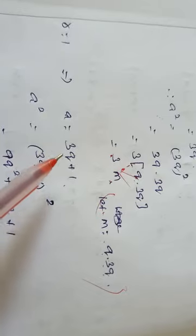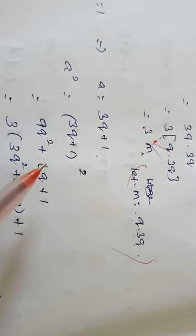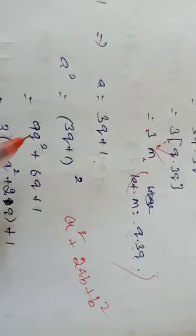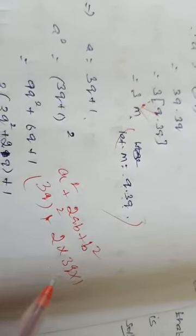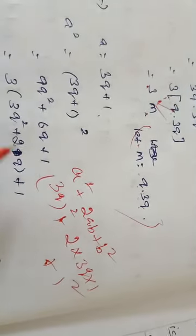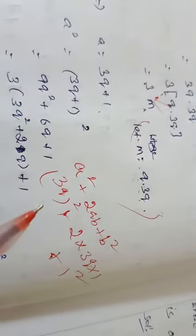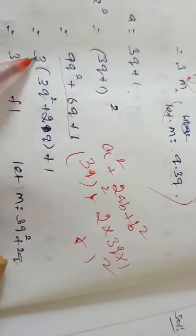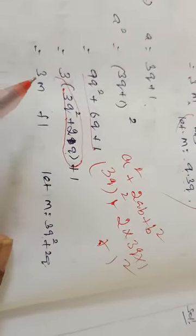Next, if R equal to 1, then A equal to 3q plus 1. We take the square on both sides: A squared equal to 3q plus 1 whole squared. Using the identity A plus B whole squared equals A squared plus 2AB plus B squared, where A equal to 3q and B equal to 1: we get 3q whole squared plus 2 into 3q into 1 plus 1 squared, which gives 9q squared plus 6q plus 1. From the first two terms, we can write 3 into 3q squared plus 2q, plus 1. So it is 3m plus 1.